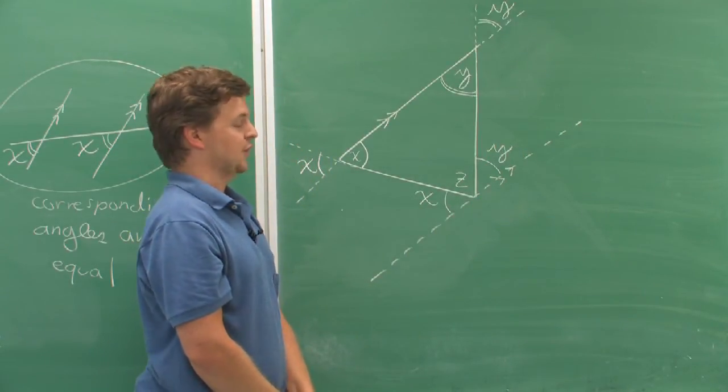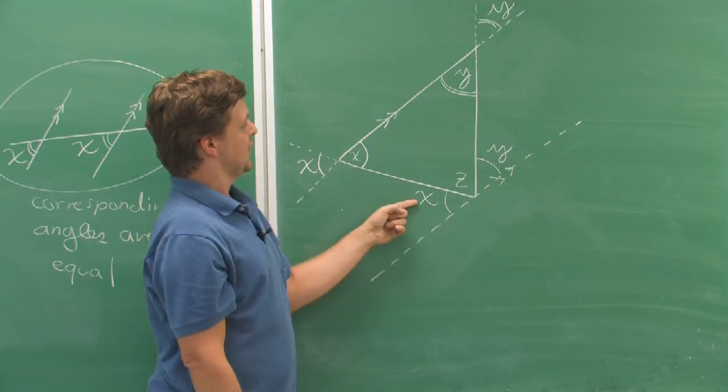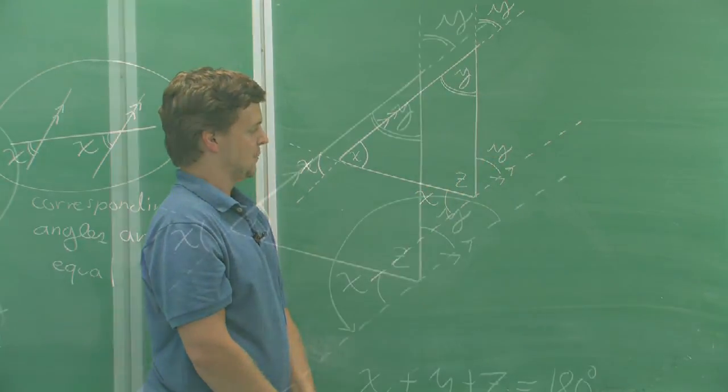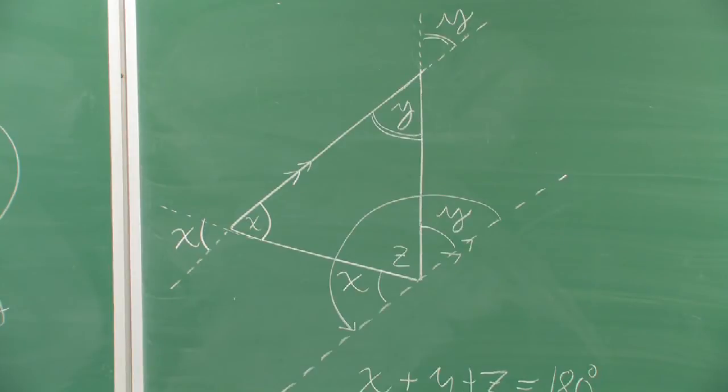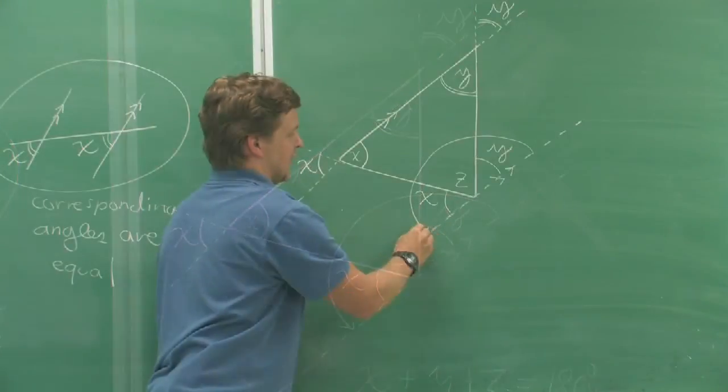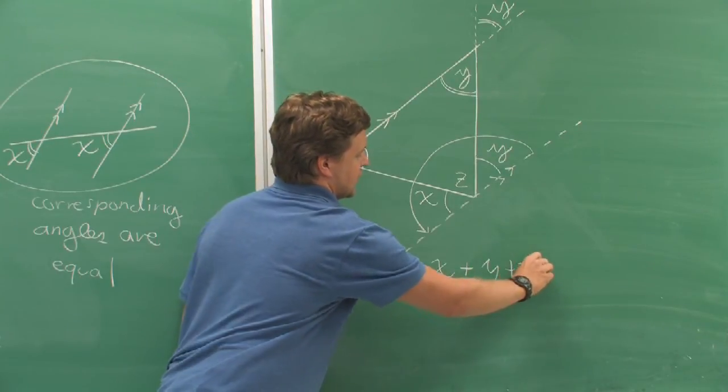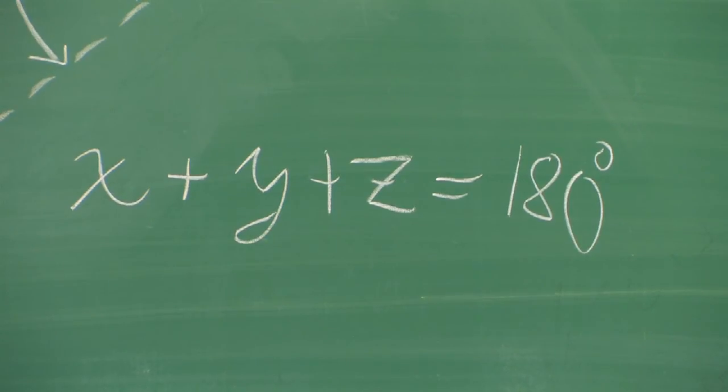But now, look what's happened. I have three angles x, y, and z making up a full 180 degrees. So x plus y plus z equals 180.